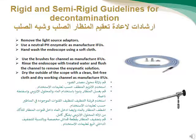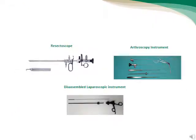Rigid and semi-rigid guidelines for decontamination: Remove the light source and secure the adapters. Use a neutral pH enzymatic solution as per manufacturer IFUs. Hand wash using a soft cloth, and use a brush for channels. Rinse the endoscope with treated water and flush the channels. Dry the outside of the scope with a clean lint-free cloth.